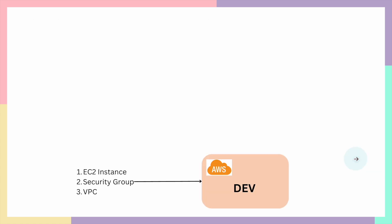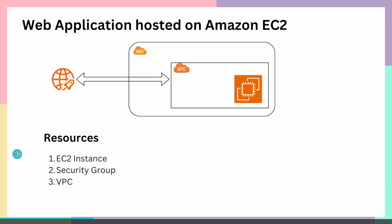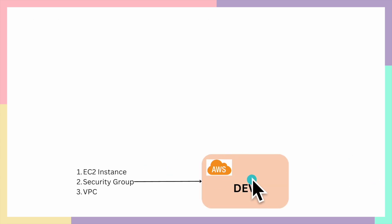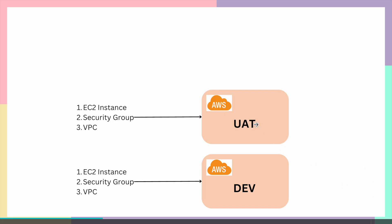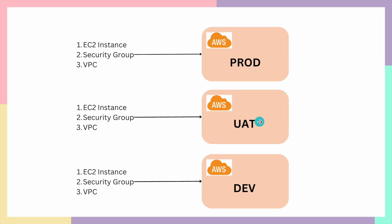These are the minimum resources needed to run a simple web application on Amazon EC2. You can create these resources in any number of ways — using the console, boto3 APIs, CloudFormation, and many others. But if you create them manually, your application needs to be deployed into different environments: dev, UAT, and prod. This introduces challenges around maintaining consistency across all environments.